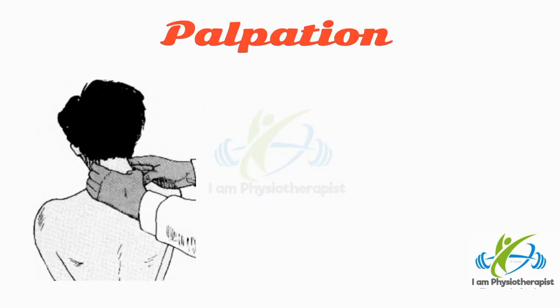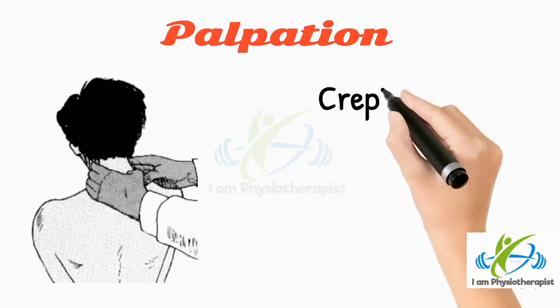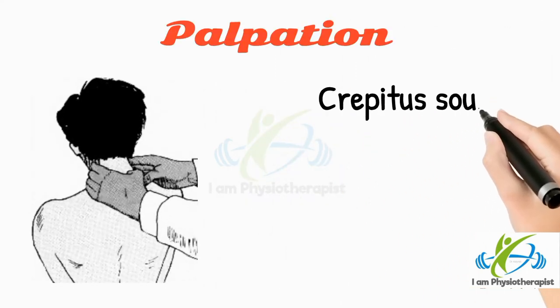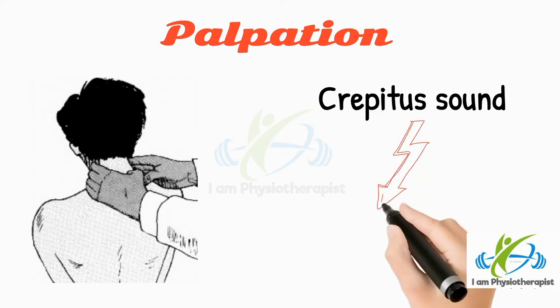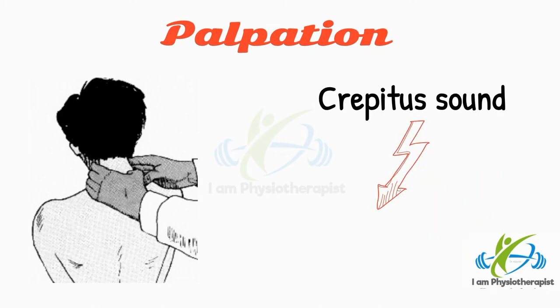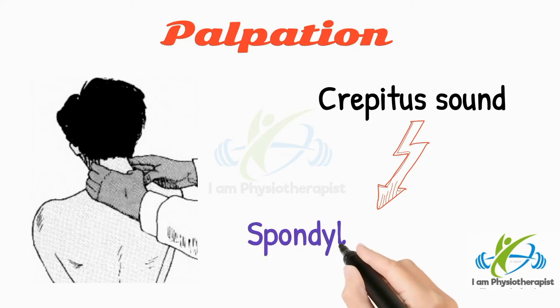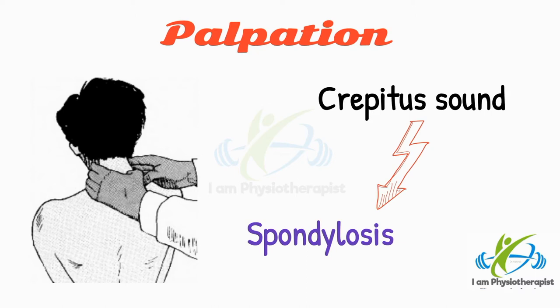Now look for crepitus sound. Spread the hands on each side of the neck and ask the patient to flex and extend the spine. Facet joint crepitus is usually detectable in this fashion and is a common finding in cervical spondylosis.